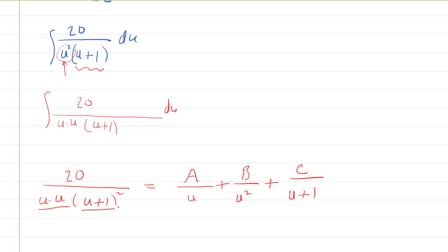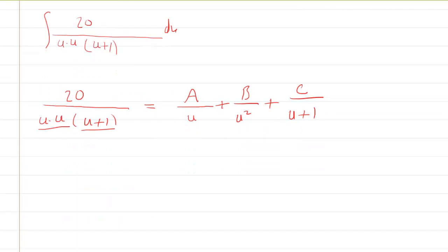And then for a non-repeated or a distinct linear factor, you're just going to have C over the u plus 1. If the u plus 1 had been squared, for example, then that also would have been a repeated linear factor. So in that case, you would have done plus D over the linear factor squared like that. But that wasn't the case here. That's just a demonstration there. We don't have to go through with that. So there is our setup.